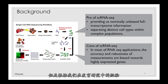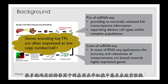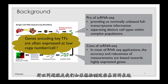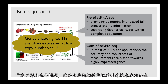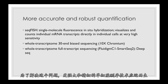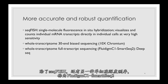In developmental studies, many genes encoding transcription factors are often expressed at low copy numbers per cell. So if we want to examine the expression of these key transcription factors, it's impossible to use general single cell sequencing to detect such genes. To solve this problem, more accurate and robust quantification methods have been developed, such as smFISH — single molecule fluorescence in situ hybridization — which can visualize and count individual mRNA transcripts directly in individual cells at very high sensitivity.